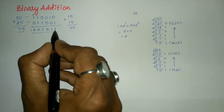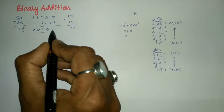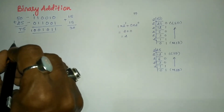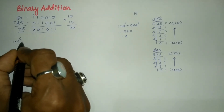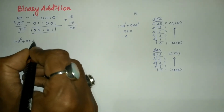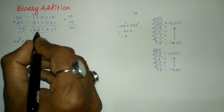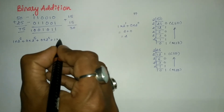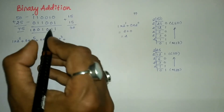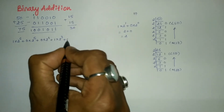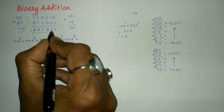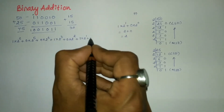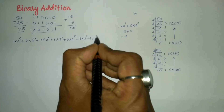To verify the result of 50 plus 25, let us check the positional weight of each bit. Counting from the right, the positions are 0 through 6. We write: 1 into 2 to the power 6, plus 0 into 2 to the power 5, plus 0 into 2 to the power 4, plus 1 into 2 to the power 3, plus 0 into 2 to the power 2, plus 1 into 2 to the power 1, plus 1 into 2 to the power 0.